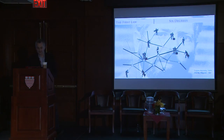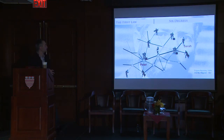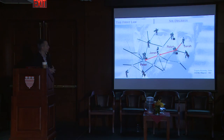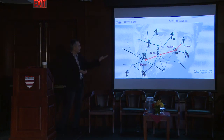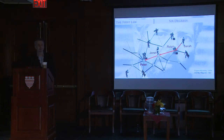The first law is well known as the six degrees or the small world property. The idea is that if you pick any two individuals in the social network, like Sarah and Peter, they may not know each other — but Sarah knows Ralph, Ralph knows Janet, Janet knows Peter, and therefore there's a short path between them. The observation going back to 1929 is that no matter where you pick these two individuals around the Earth, there will be a relatively short distance between them.